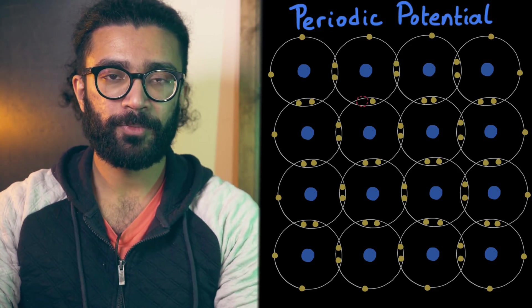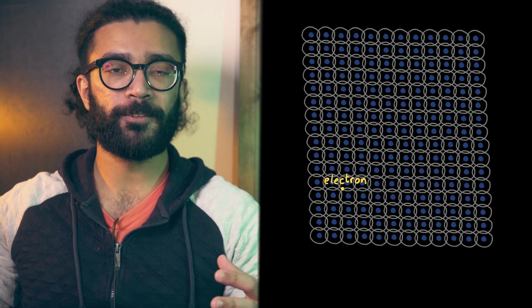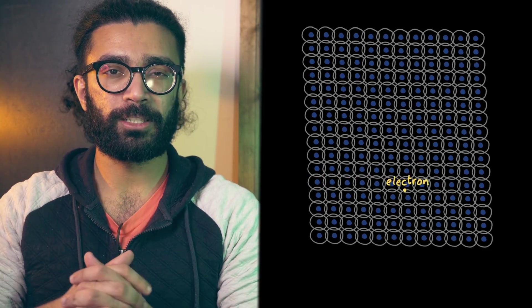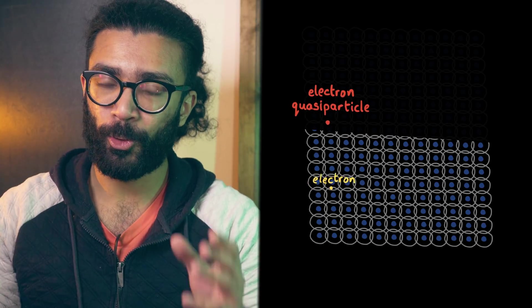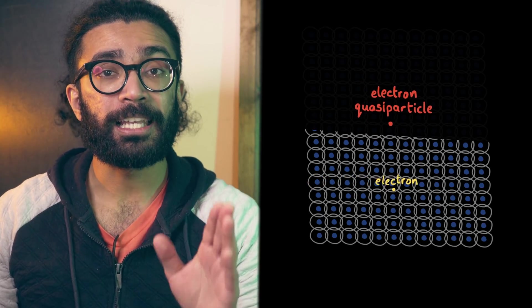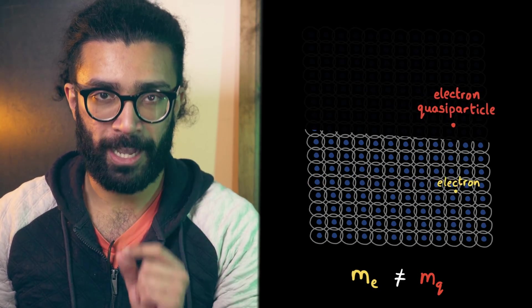However, it turns out that on a large enough scale, meaning if we zoom out enough, an electron in our material can actually be treated as if it were moving through a vacuum or empty space if the electron had a different mass.